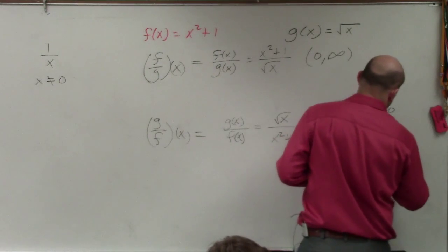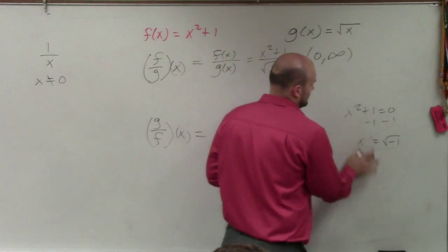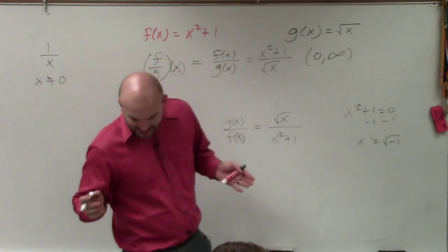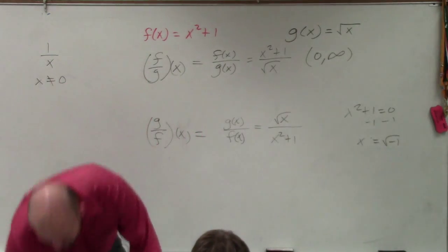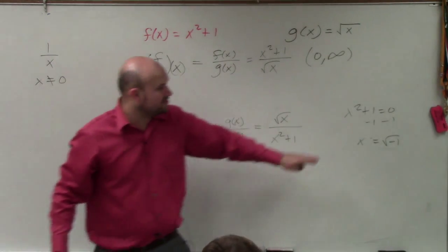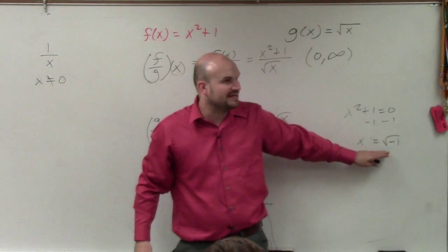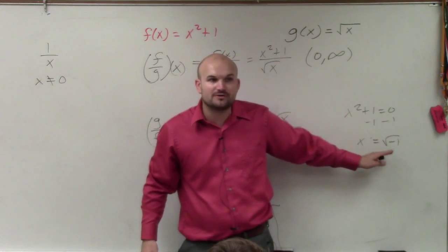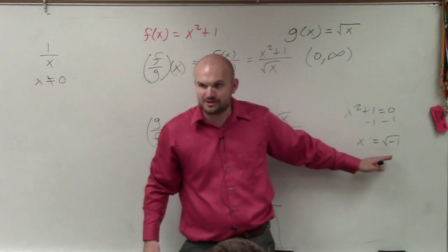So x squared equals negative 1, meaning x equals the square root of negative 1. You can't take the square root of a negative number. So therefore, the denominator doesn't equal 0 for all real numbers - it's 0 for imaginary numbers.